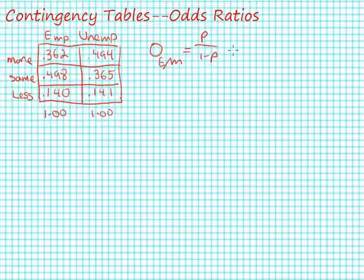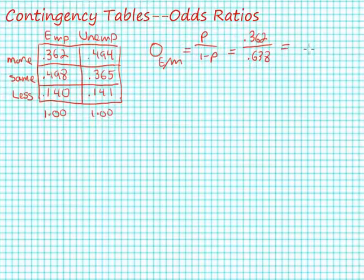In this case, the probability of favoring increased government spending is 0.362, and one minus 0.362 is 0.638. So our odds for this group of individuals is 0.567.